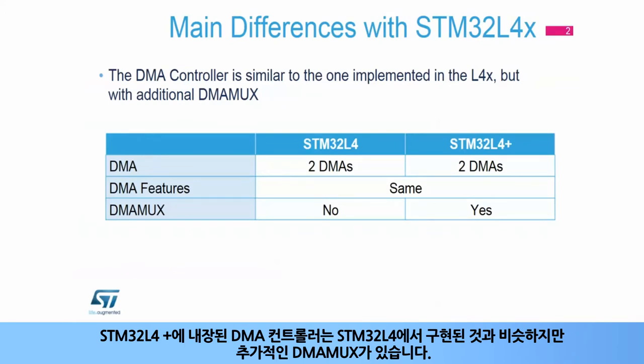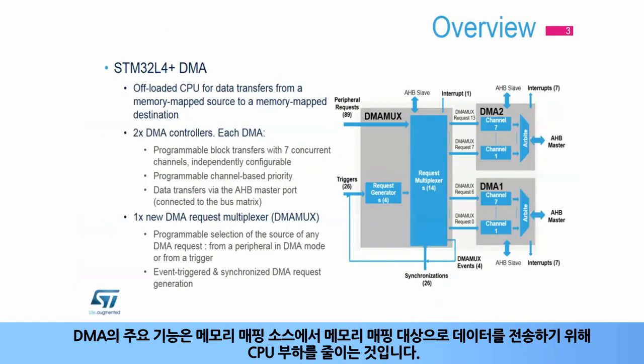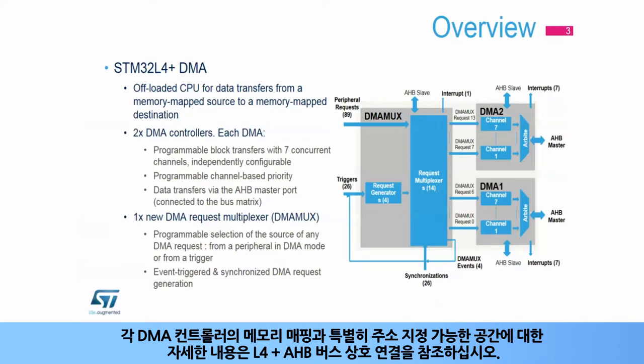The DMA controller embedded in STM32L4 Plus is similar to the one implemented in the STM32L4, but with an additional DMA MUX. The main feature of the DMA is to offload the CPU for data transfers from any memory-mapped source towards any memory-mapped destination. For more information about the memory mapping and specifically addressable space for each DMA controller, refer to the L4 Plus AHB Bus Interconnect.